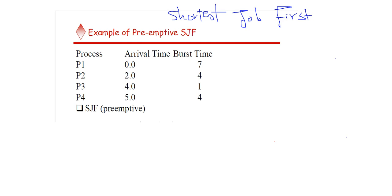Hello dear students. In this tutorial, a very short video, we're going to talk about Shortest Job First preemptive. We have four processes: P1, P2, P3, and P4, with arrival times 0, 2, 4, and 5, and service times (burst times) of 7, 4, 1, and 4 respectively.